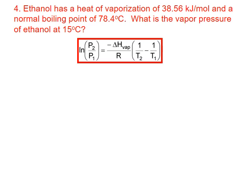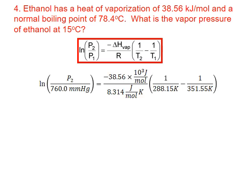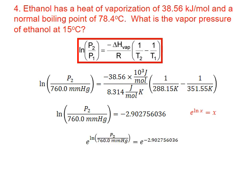We substitute all of this data into the two-point form of the Clausius-Clapeyron equation. We simplify on the right-hand side using our calculator and it gives us negative 2.902756036. Again, we raise everything to the base e to isolate and get rid of our natural log. The natural log on the left-hand side cancels out, leaving us with just the ratio of P2 divided by 760 millimeters of mercury. On the right-hand side, e raised to the negative 2.902756036 gives us 0.054871783.